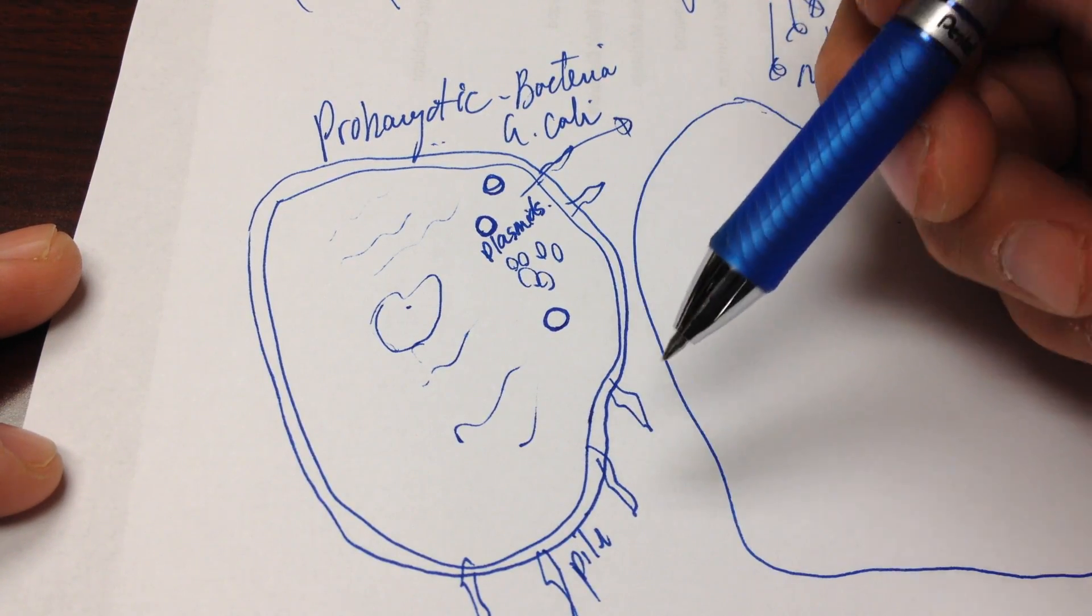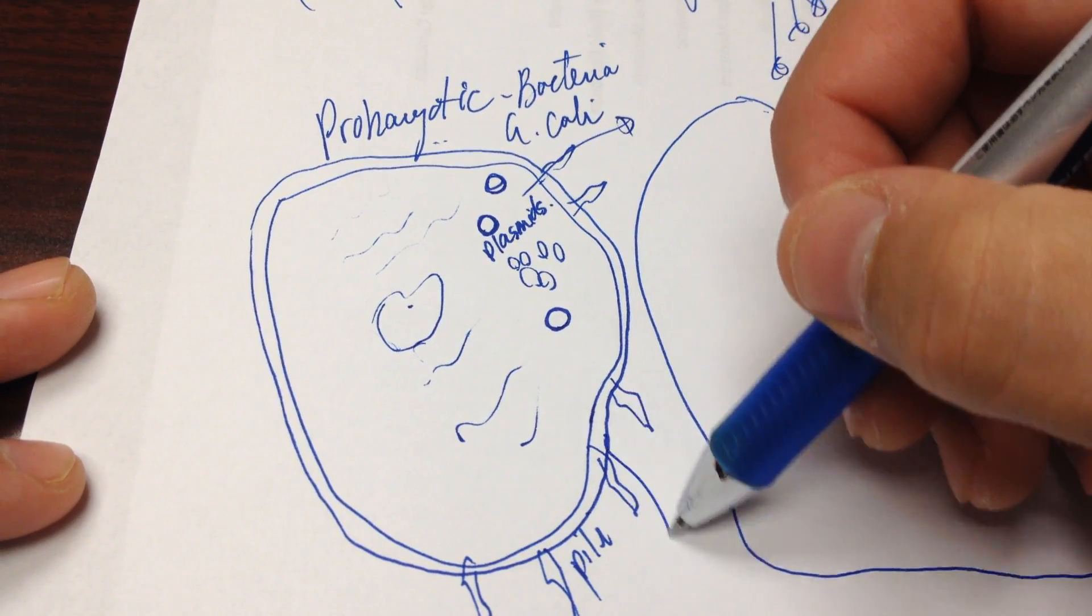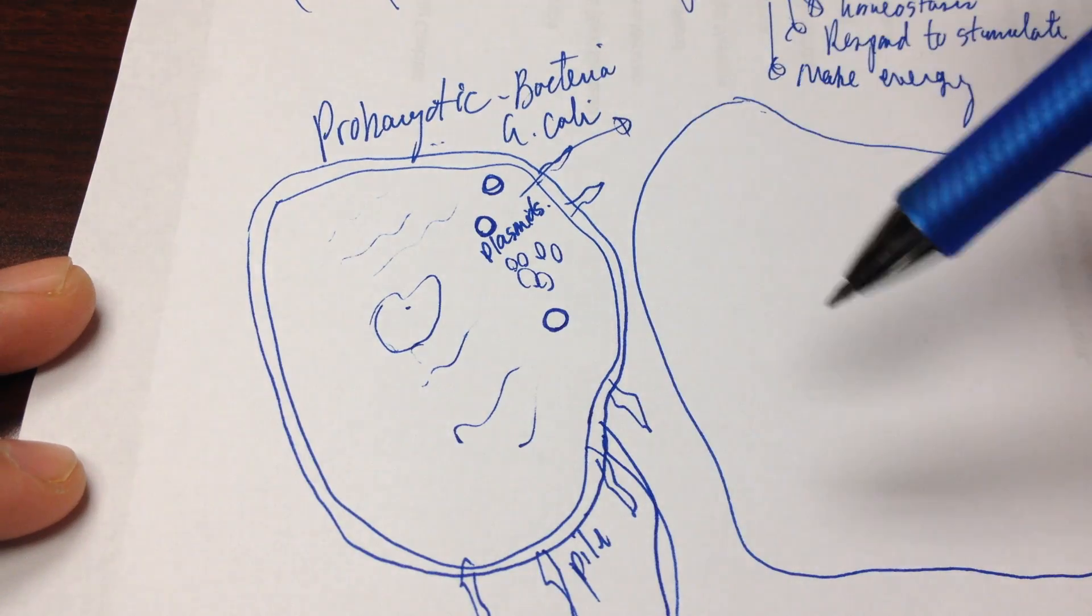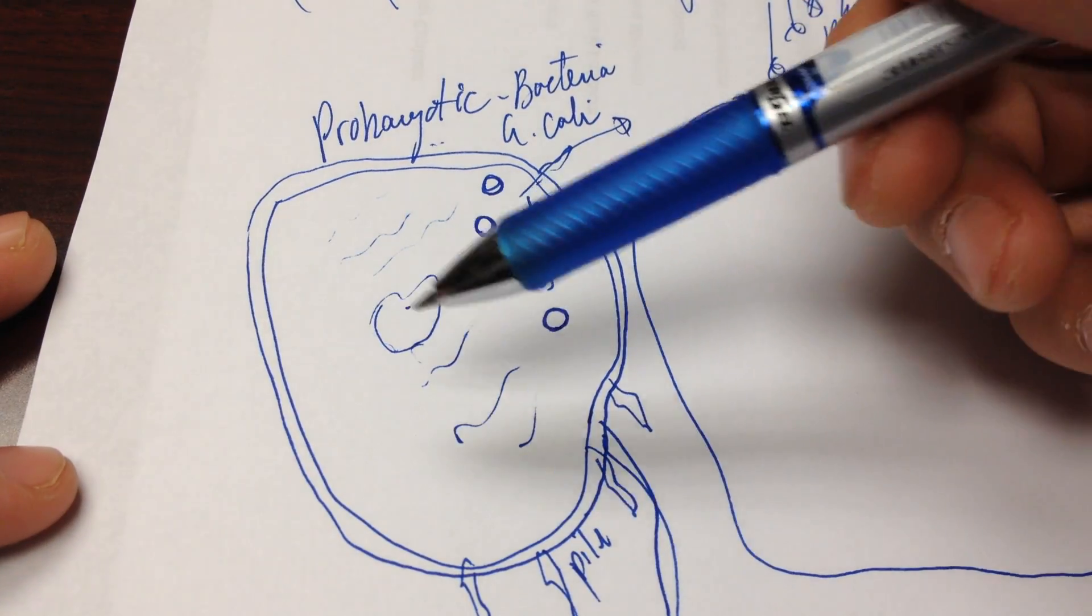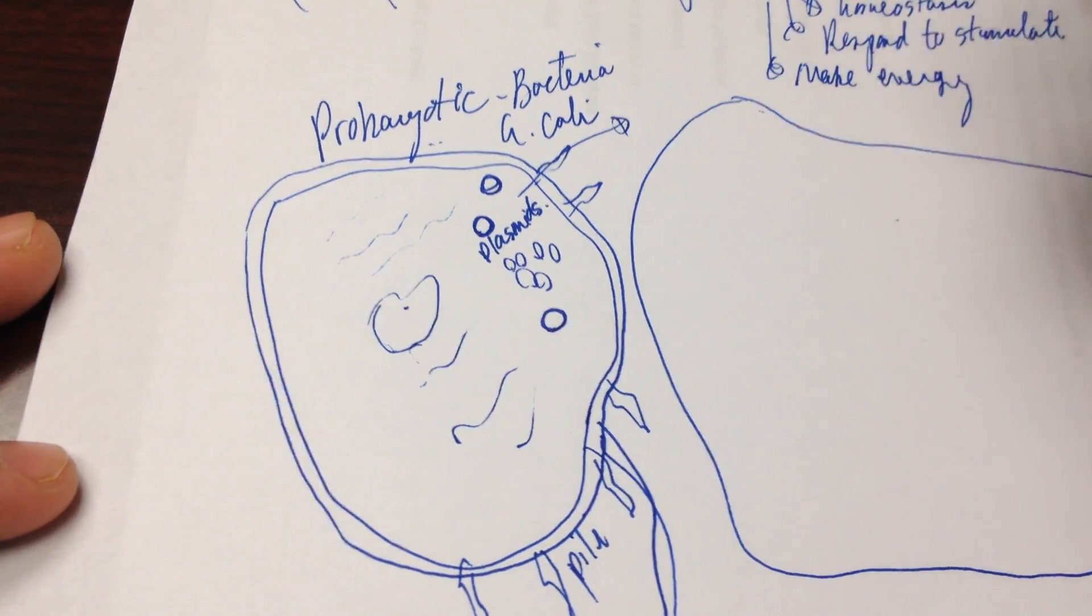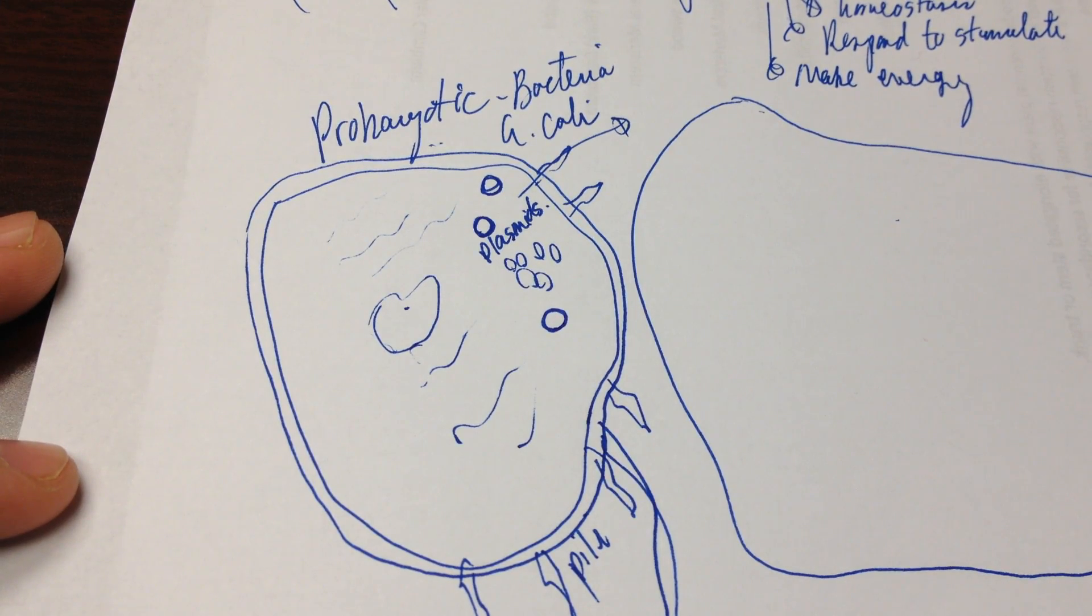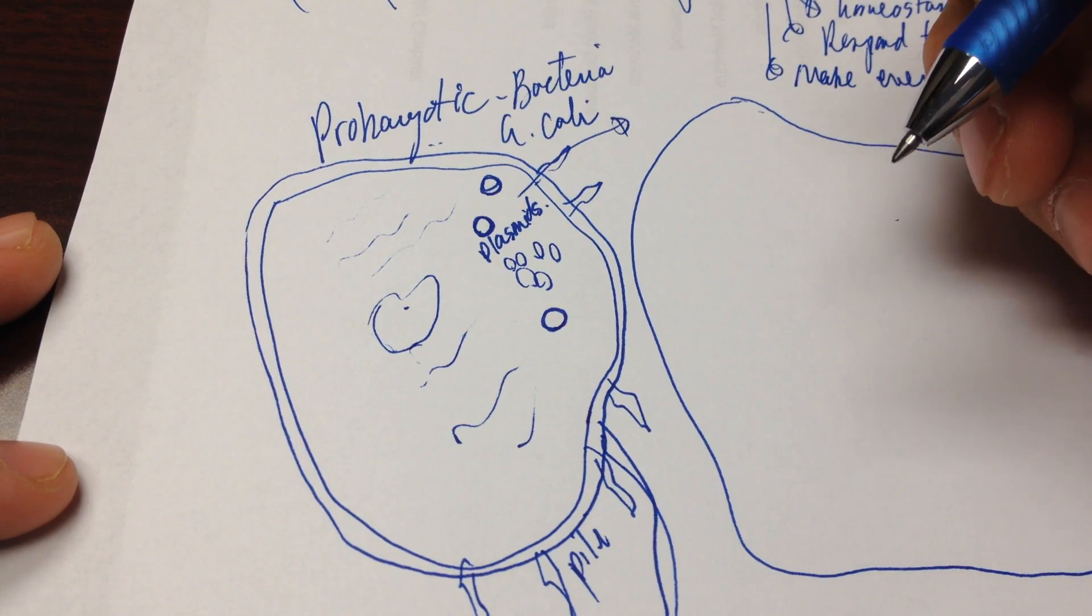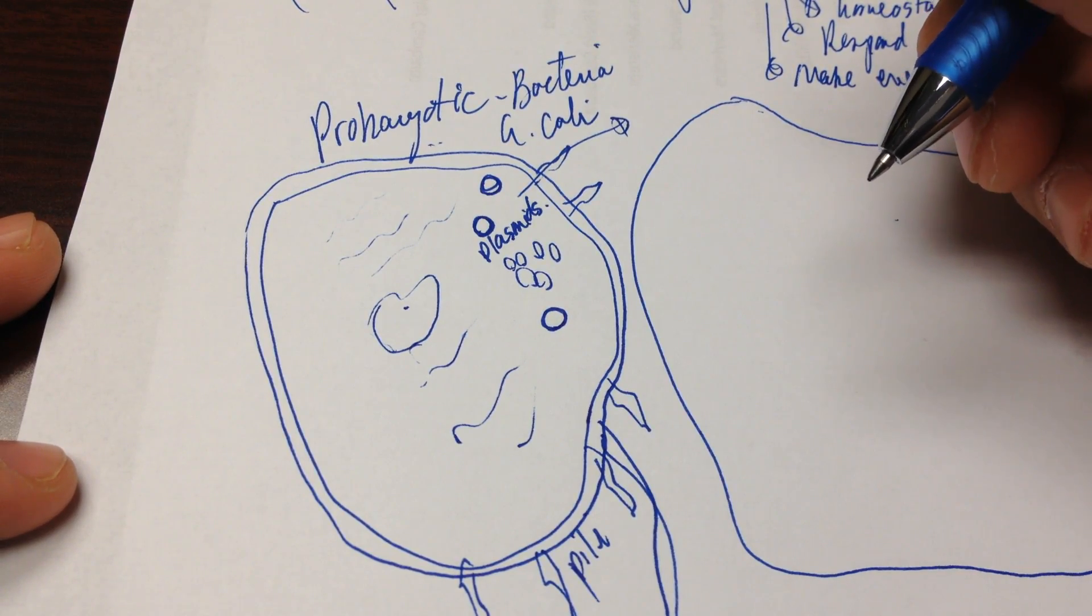So a couple other optional bacteria structures. Some of them also have flagella, and you guys are familiar with the fact that those allow them to swim around more easily. And, of course, some animal cells also have these. So do some plant cells. In fact, most sperm cells of plants and animals have flagella. And they can be all different shapes and sizes.